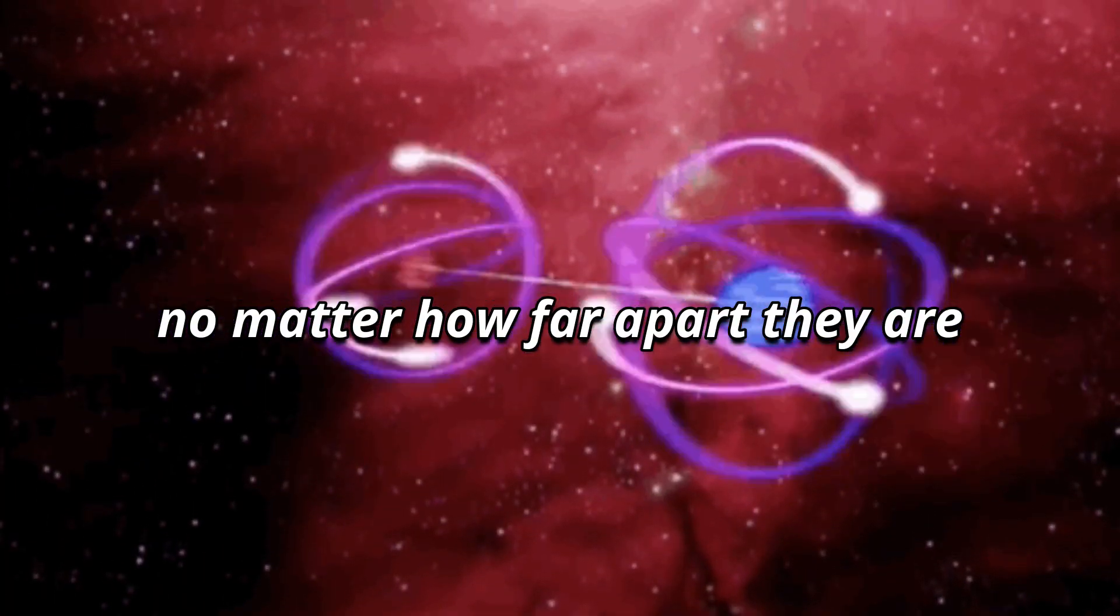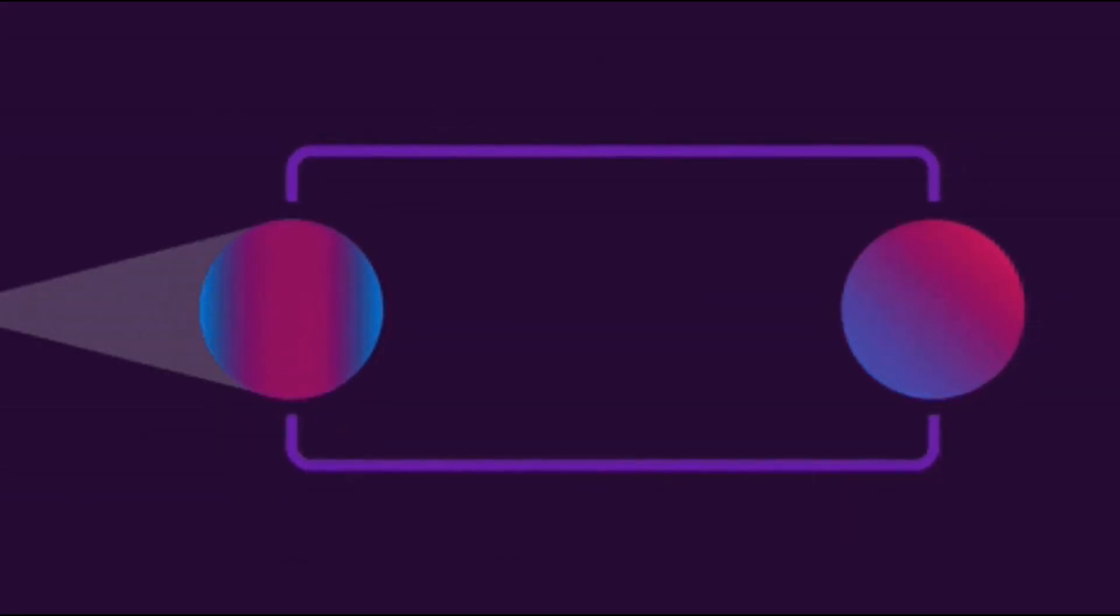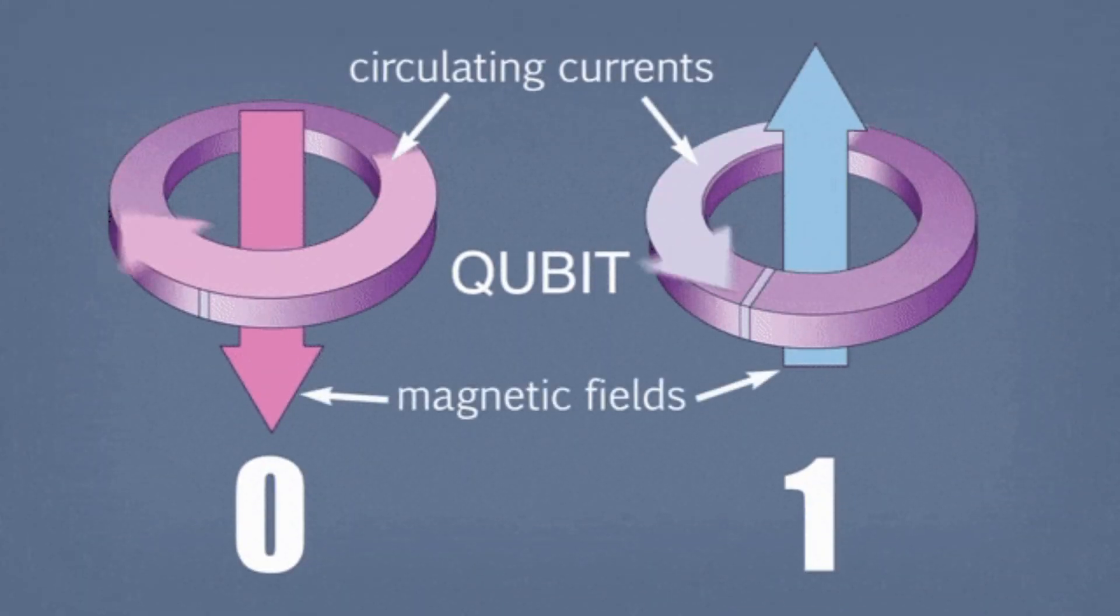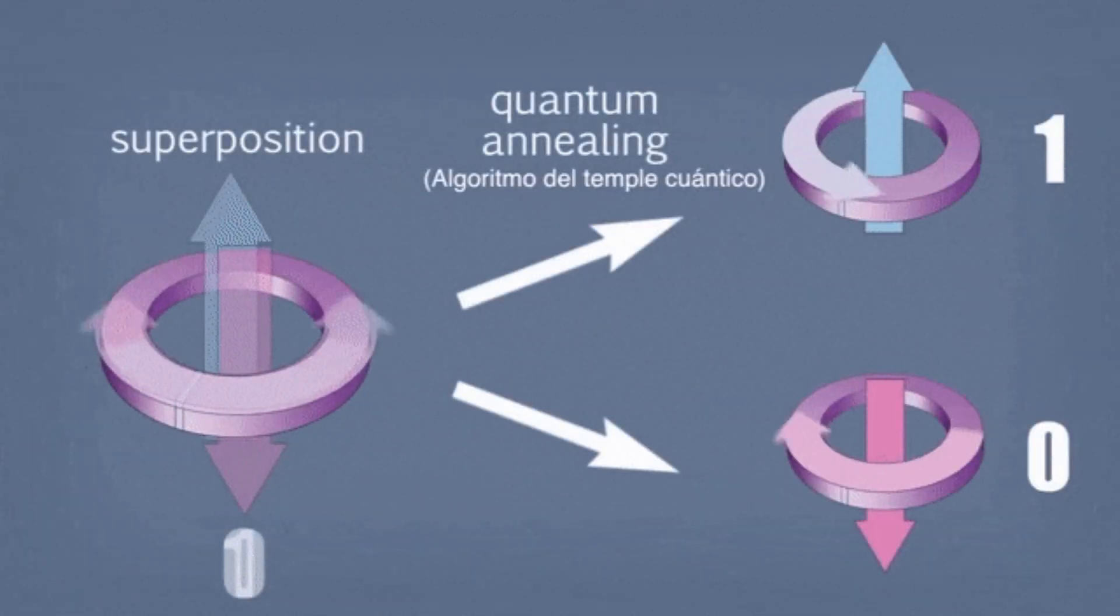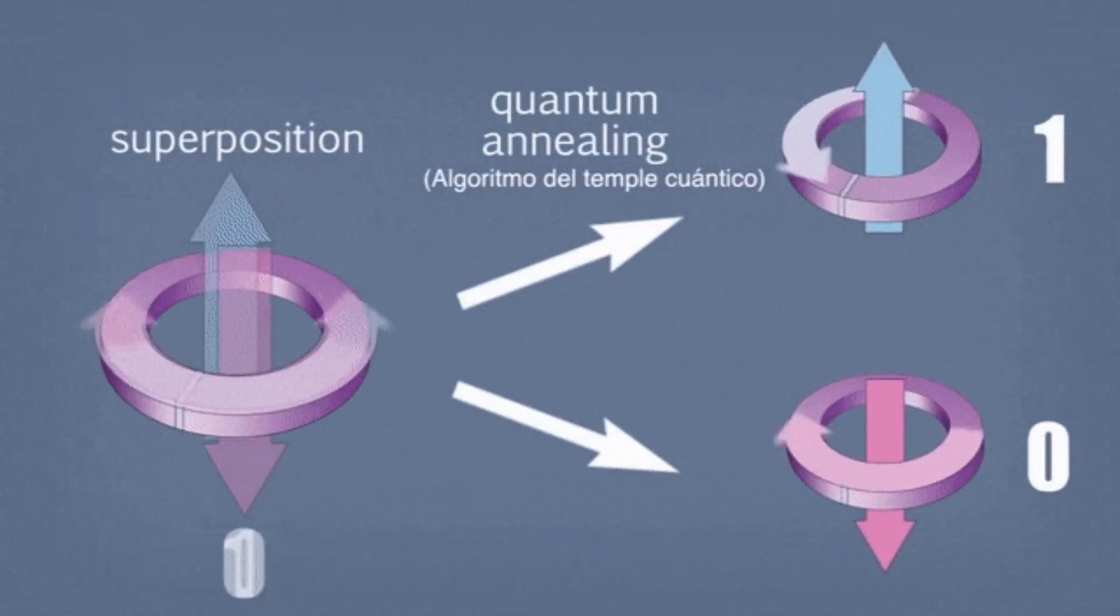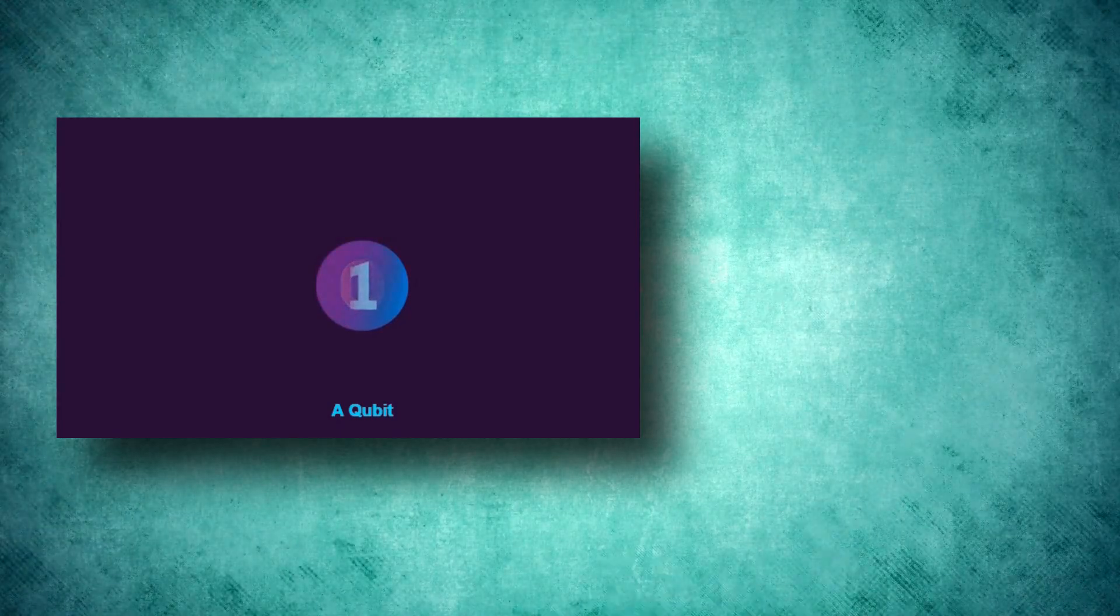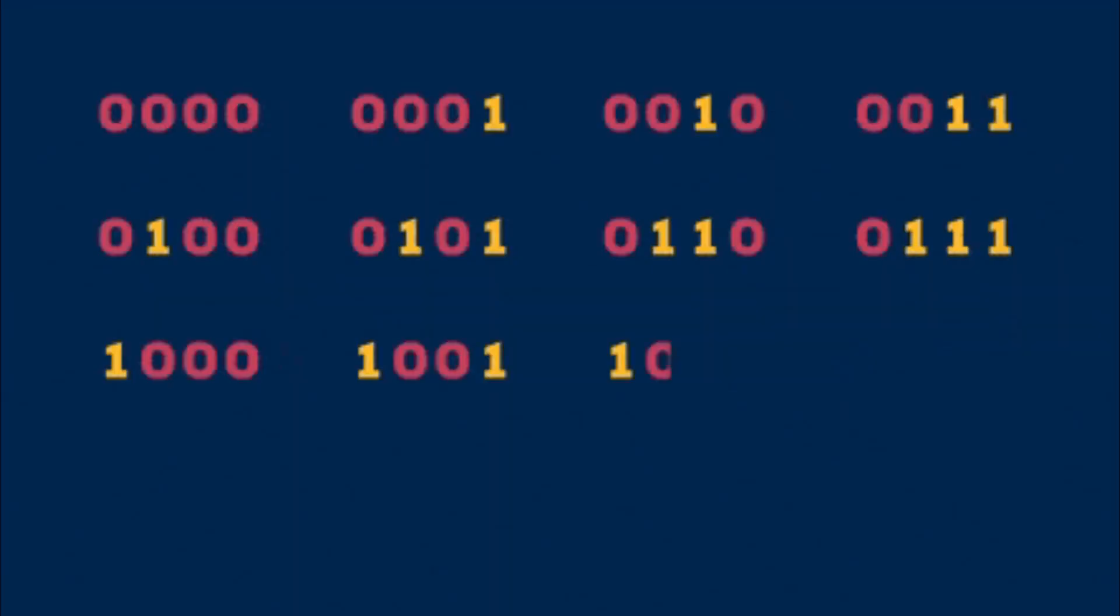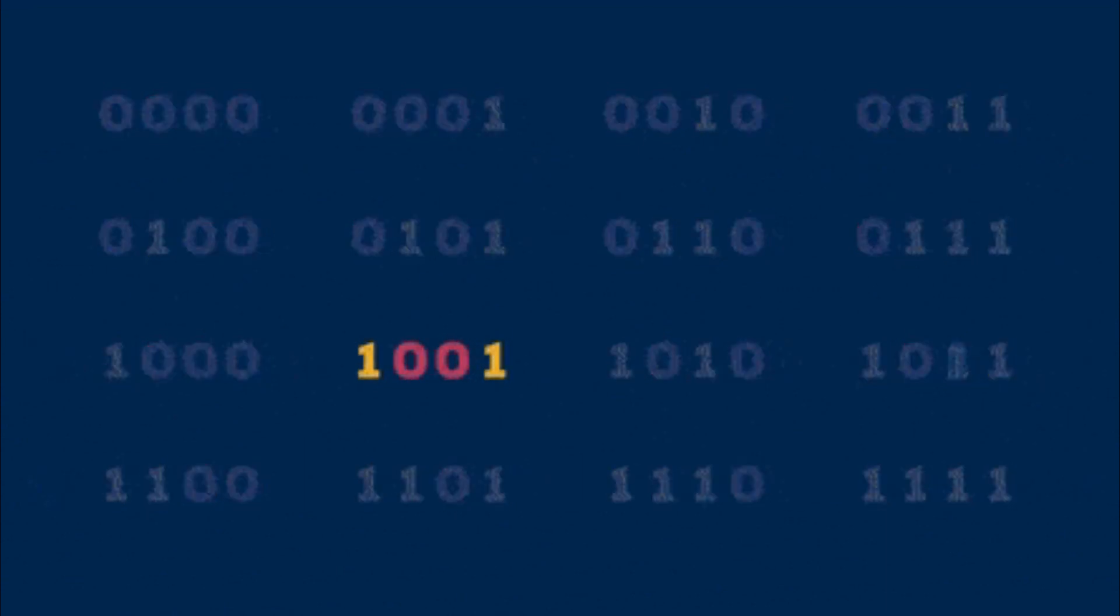Once the quantum gates have had their fun, it's time for the grand reveal. The qubits are measured, and in that moment they collapse from their state of superposition, choosing a definite state, either 0 or 1. This collapse isn't random, but influenced by the manipulations performed by the quantum gates. These final states provide the answer to the computation.